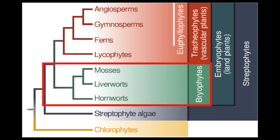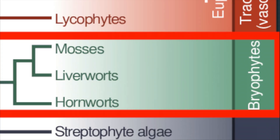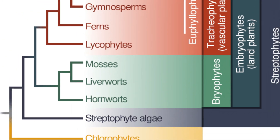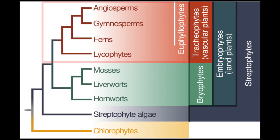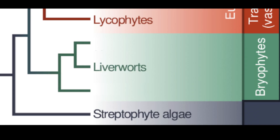Nonvascular plants are called bryophytes. There are two main groups of plants in the plant kingdom: the bryophytes, or nonvascular plants, and the tracheophytes, or vascular plants. Bryophytes consist of liverworts, hornworts, and mosses, and they were the first to evolve.